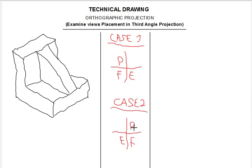The plan is always on top of the front view. In case one, the plan is in the second quadrant and the front view is in the third quadrant. In case two, we have the front view in the fourth quadrant, the plan in the first quadrant, and the end view in the third quadrant.